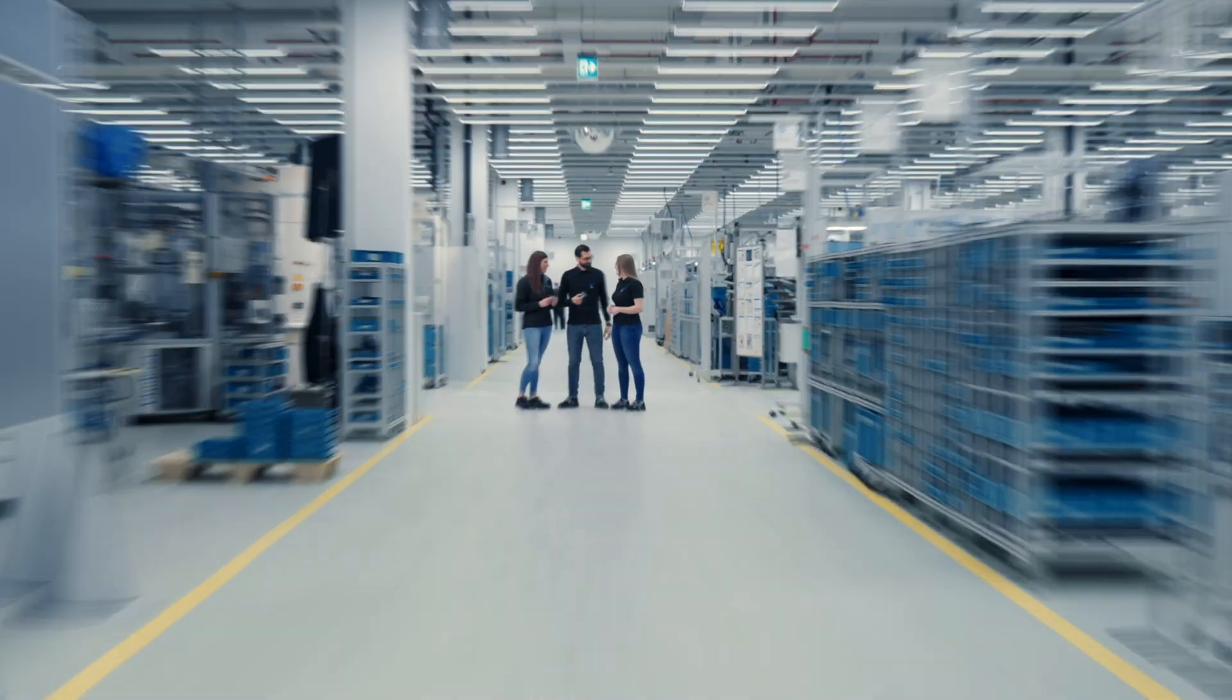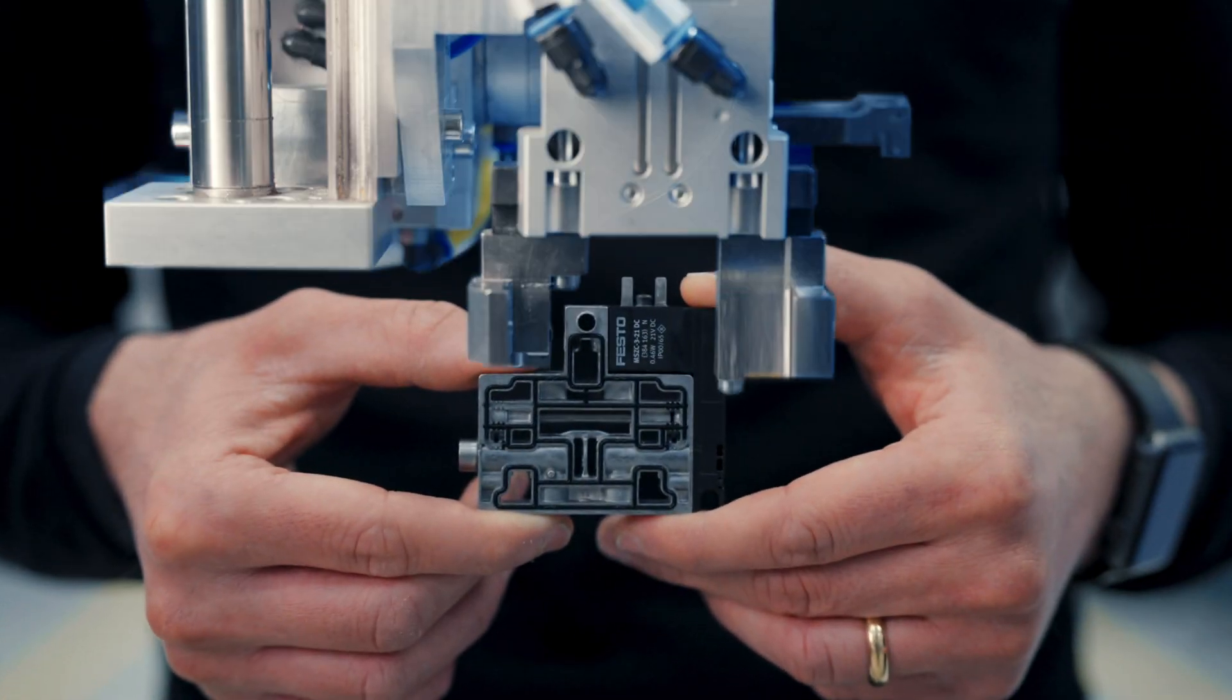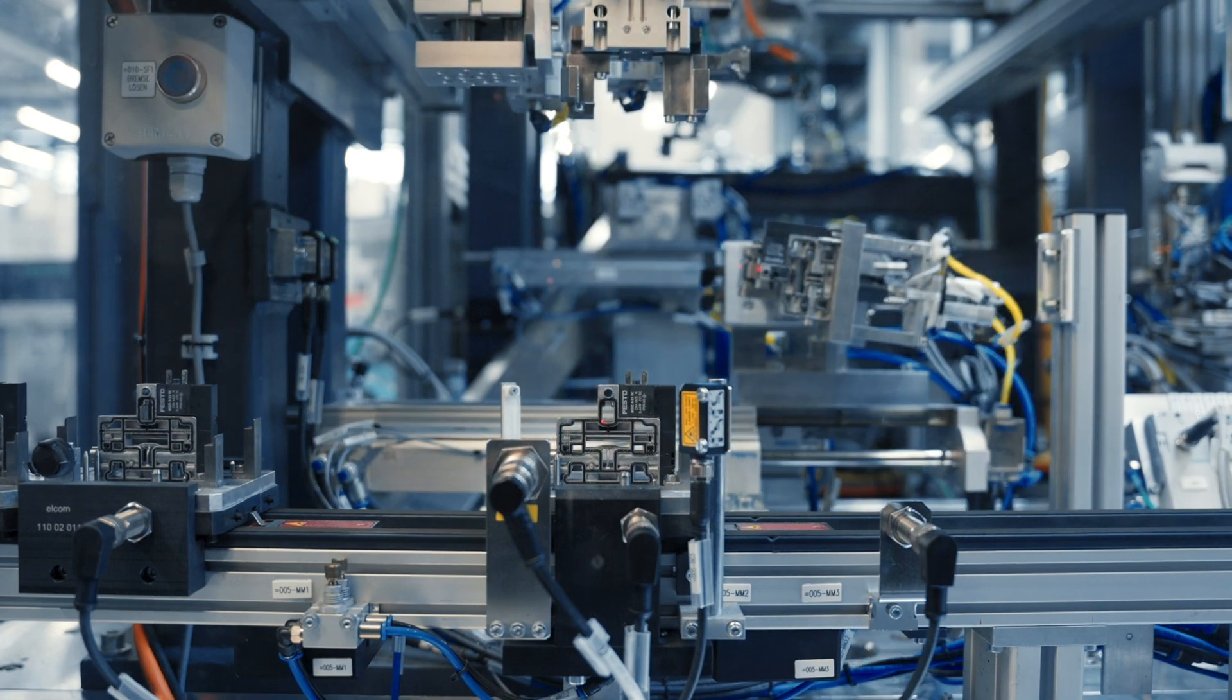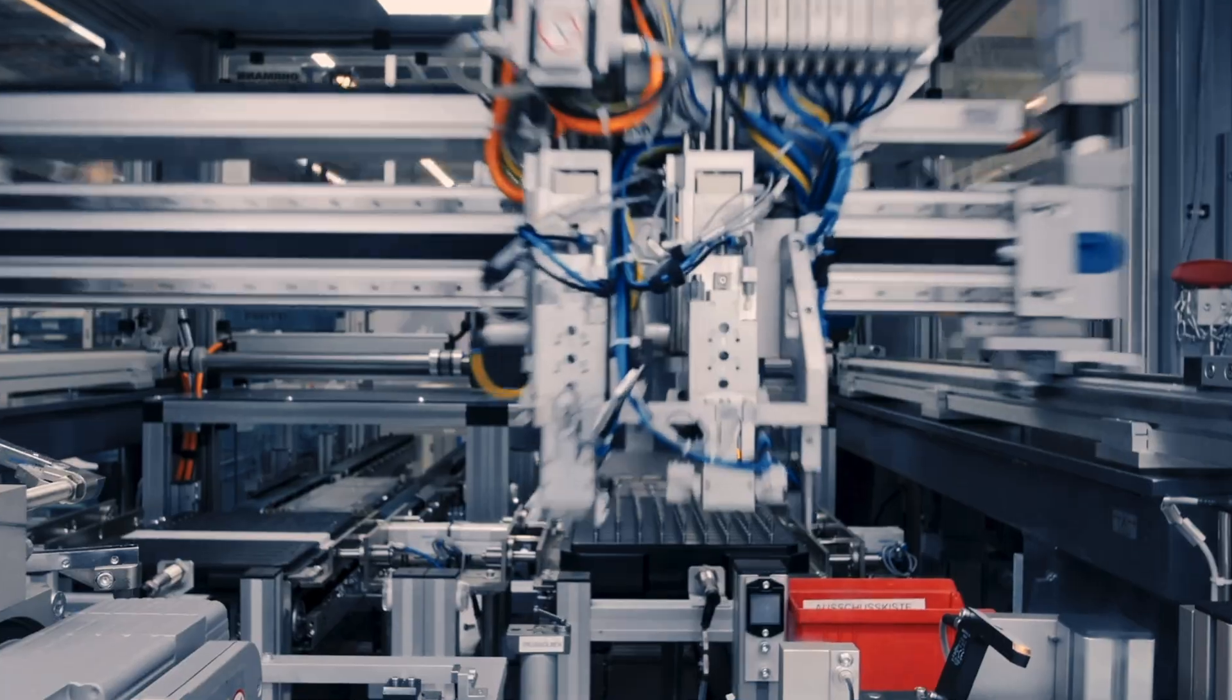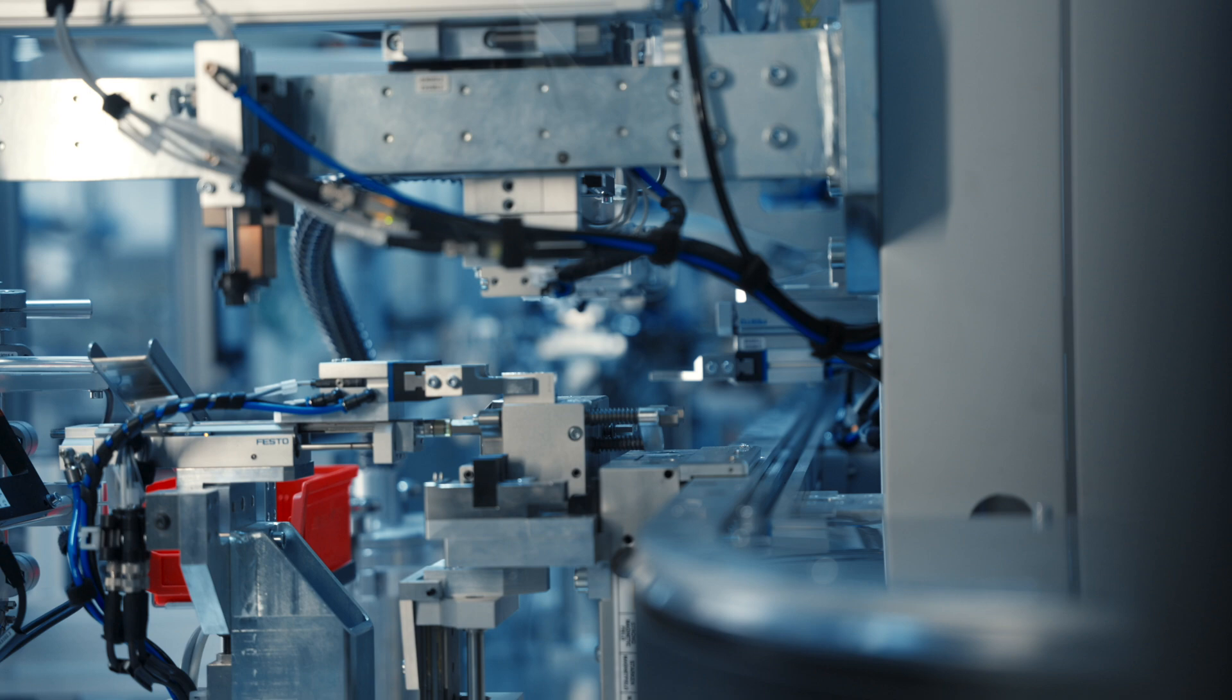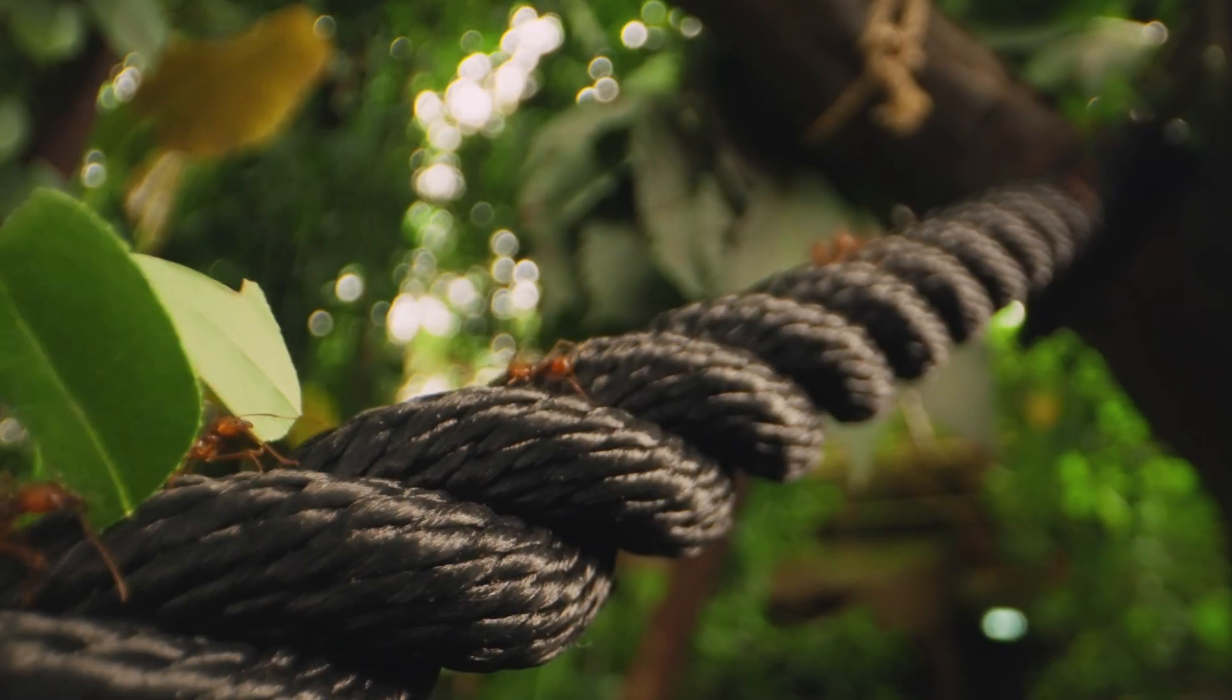These are questions we ask ourselves at Festo. Because for us, automation technology has a lot to do with nature and the climate. We want to develop sustainable solutions that protect our nature and our resources, all in the name of reducing carbon dioxide in production.